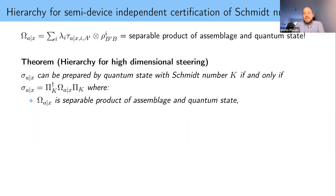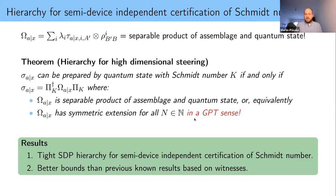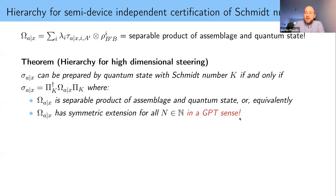In quantum theory we know how to detect entanglement between two quantum states, but here we need to detect entanglement between an assemblage and a quantum state. The state space of all assemblages is not the quantum state space — it's something else. So to detect entanglement here we use the generalized DPS hierarchy, because it works for all GPTs — we just have a separability problem in some GPT. Even though assemblages are not quantum states, they still consist of positive semi-definite matrices, so we can write this as a semi-definite programming problem.